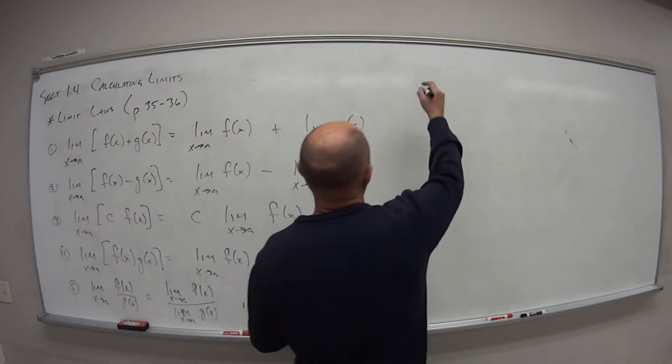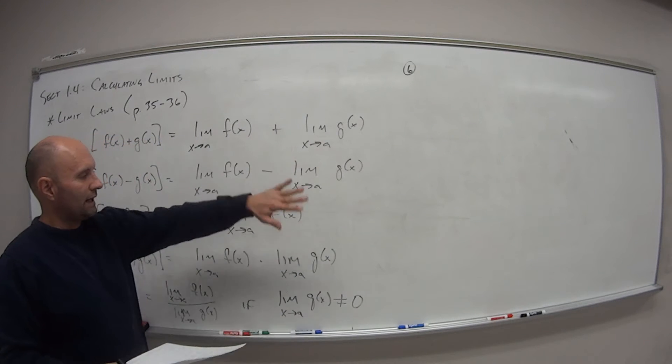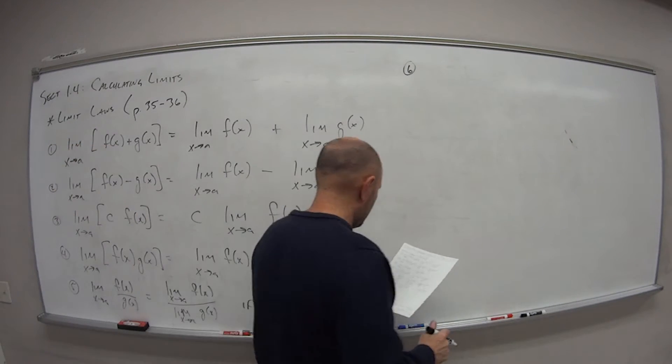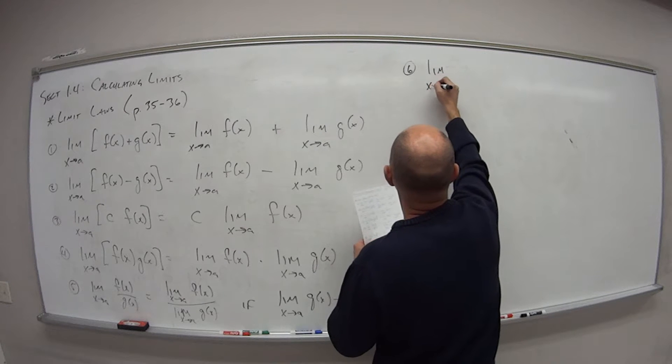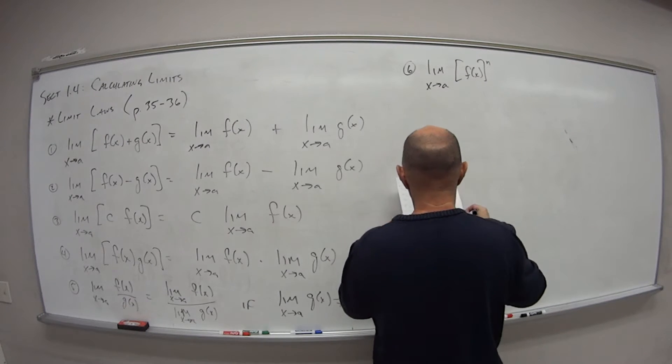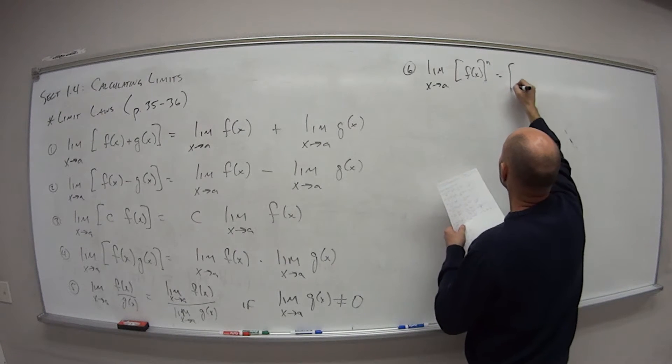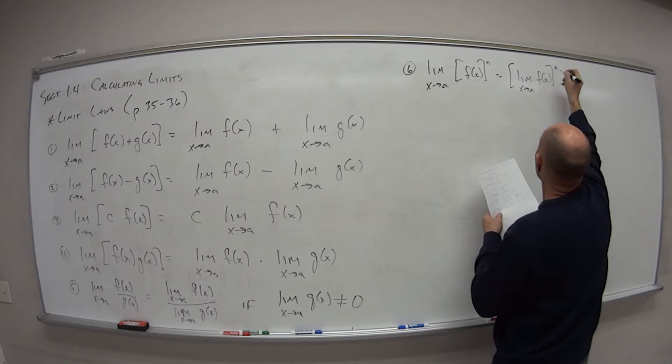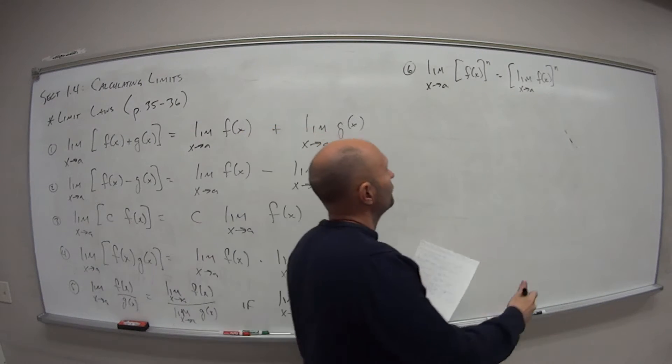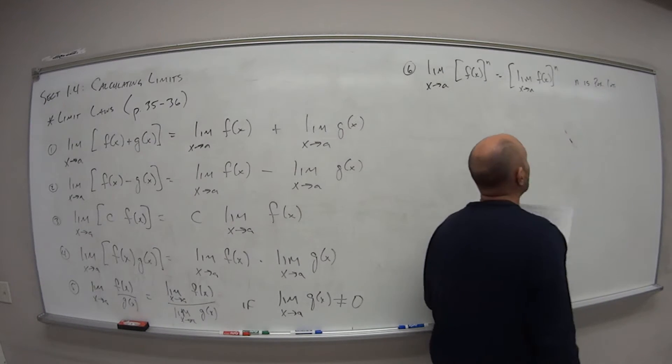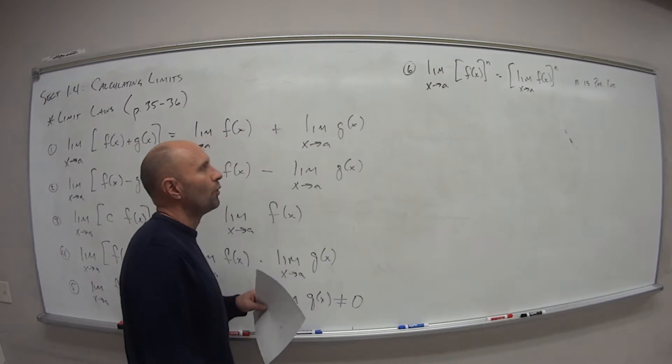So that's number five. Number six—sorry for scrunching that out. I'm going to try to get all these on one board, so if you've got to go back, you can always just go to the end of the video and see all of them at once. The power: so the limit as x approaches a of f(x) to the nth power is the same as the limit of the function as x approaches a, and then take that all to the nth power. And here we're assuming that n is a positive integer—two, three, four, five, et cetera.